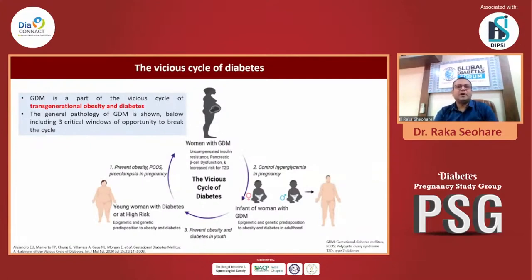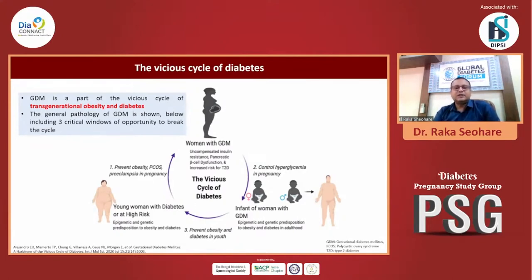GDM is taken as part of a vicious cycle of transgenerational obesity and diabetes. GDM patients, when they go ahead in their lifespan, face a huge effect — either in the infant or in youth — because uncompensated insulin resistance and pancreatic beta cell dysfunction increase the risk of type 2 diabetes in the future. Controlled hyperglycemia in pregnancy will have a better effect, as there is an epigenetic and genetic predisposition to diabetes and obesity.